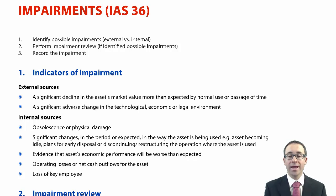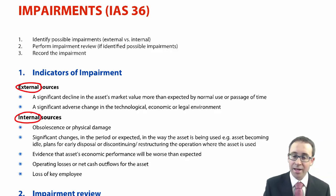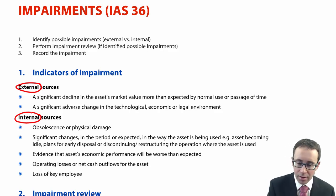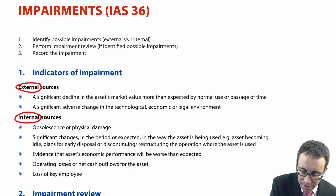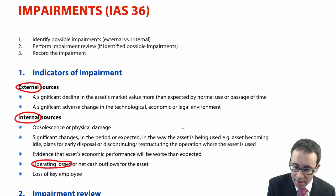When you're looking at an impairment, the first thing we need to identify are the indicators of an impairment. We're looking at either external or internal indicators — something you would likely have to spot within an exam question. A common one is that a business is making operating losses, which could be a sign of an impairment, or a change in the way the asset is being used.